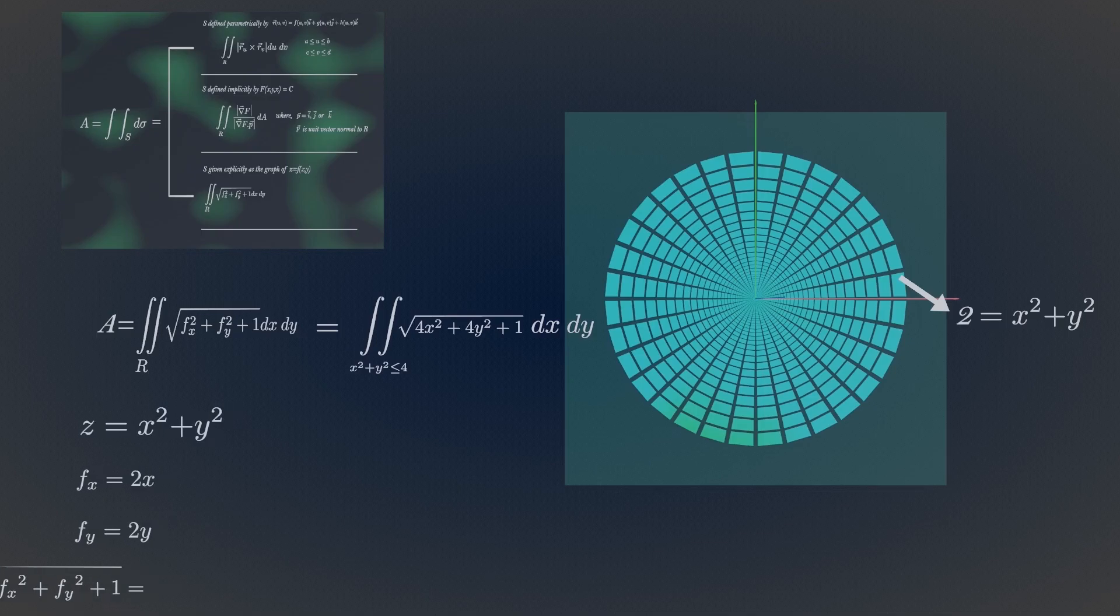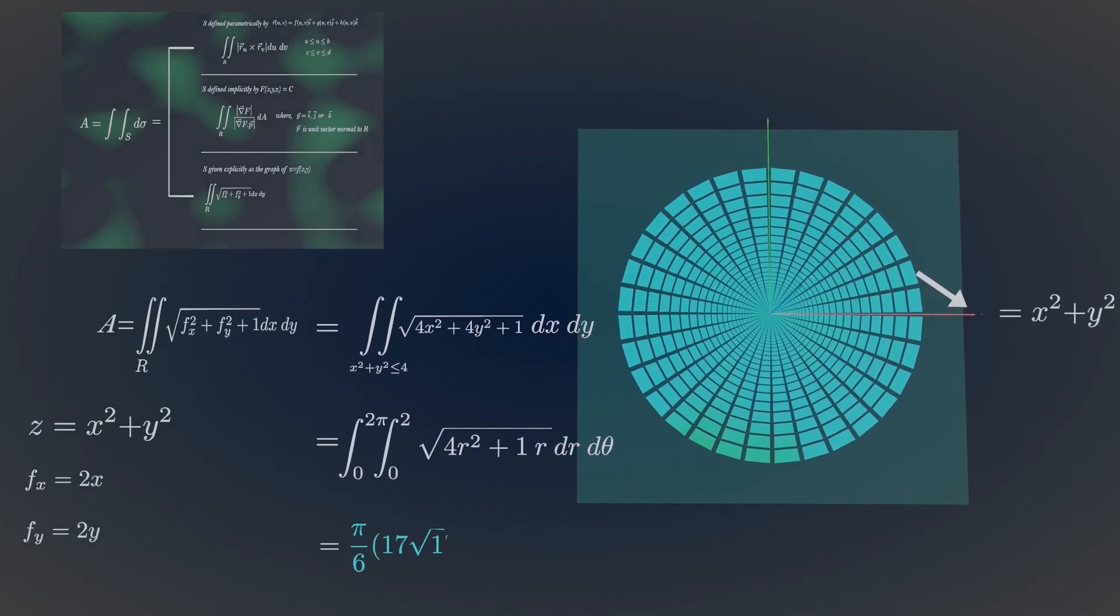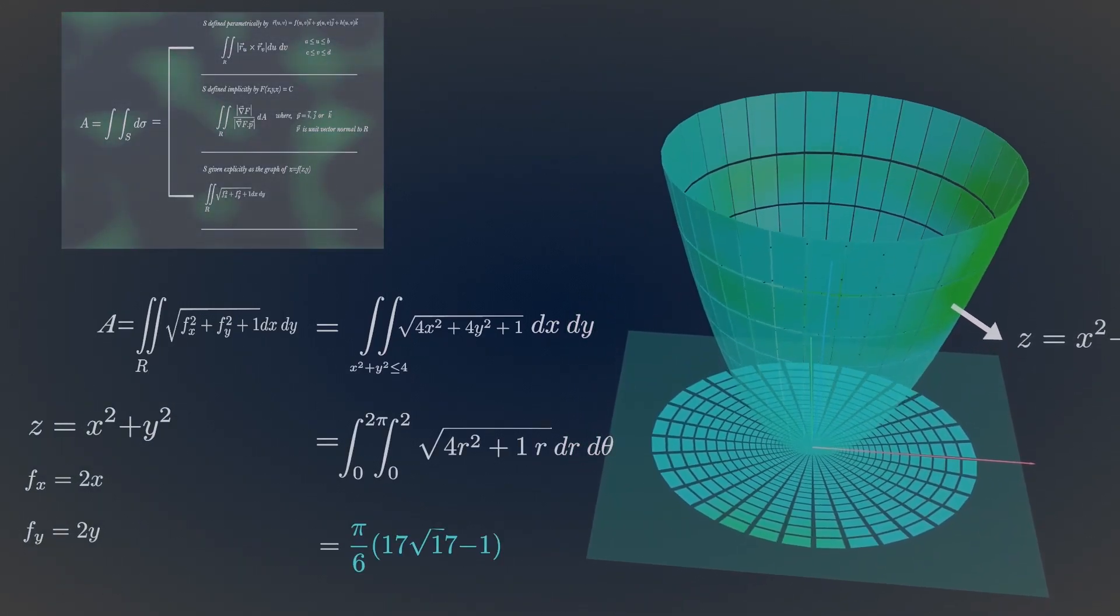Now just double integrate over the region of this circle. You will get the area of this paraboloid.